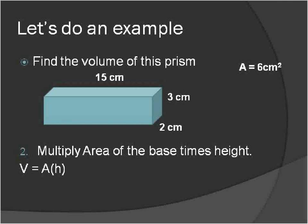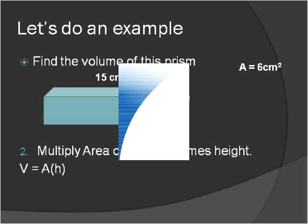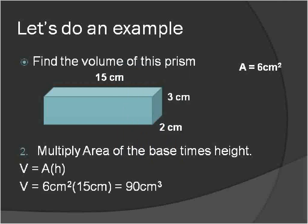Anyway, we're going to multiply the area of the base, which is 6 centimeters squared, times the height, which is 15, and 6 centimeters squared times 15 centimeters will give us 90 centimeters cubed. So that's going to be our volume. That's with our first shape.